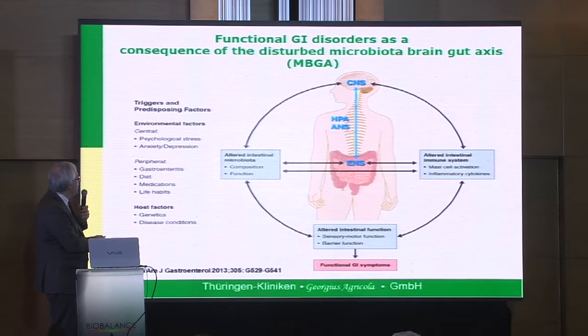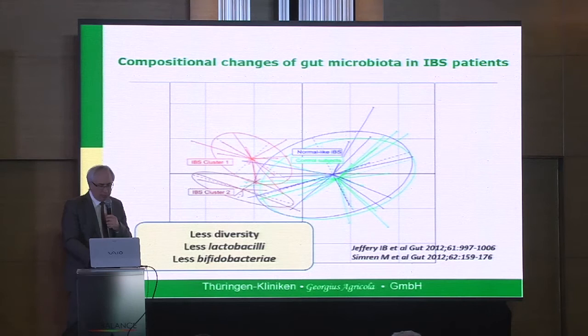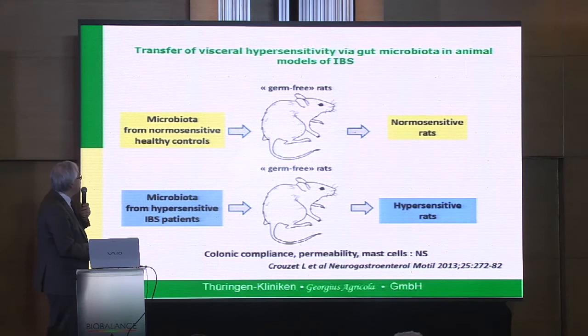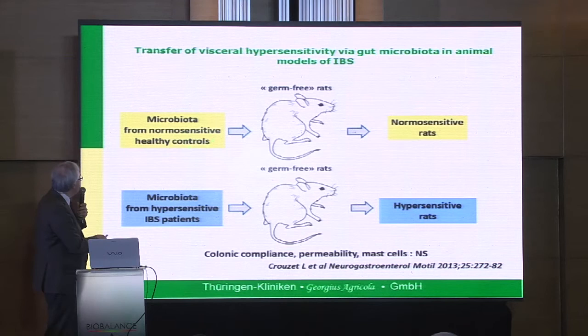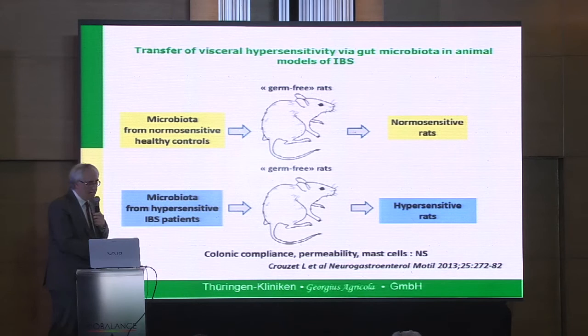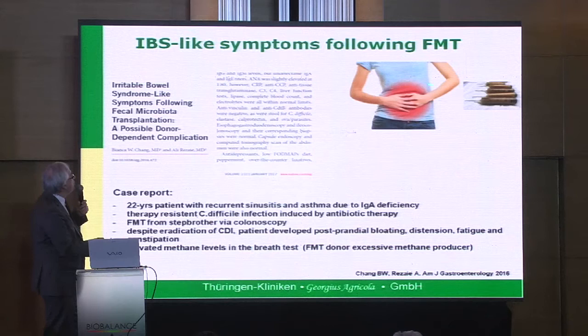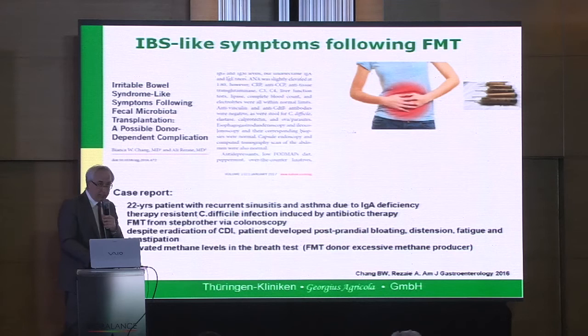We have less diversity and fewer good bacteria in the gut. A simple experiment showed that if we transfer microbiota from healthy people to germ-free animals, the rats are healthy. But if we transfer microbiota from IBS patients, the animals develop the same disease — indication that we can transfer this propensity to IBS. It may also happen that if the donor is not optimal, the patient can get IBS-like symptoms after FMT.